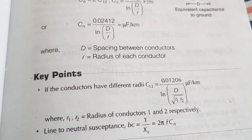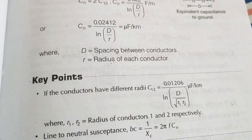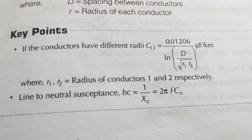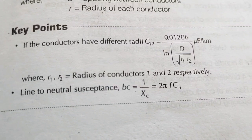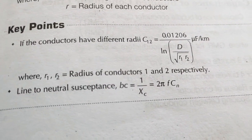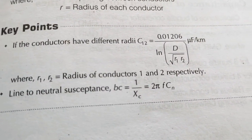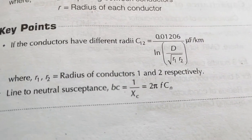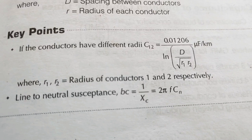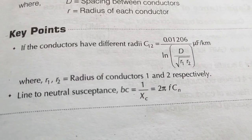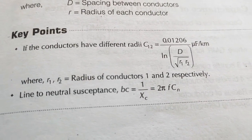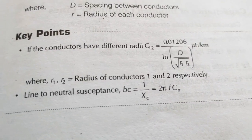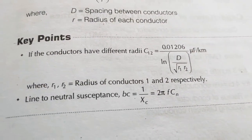Here D is the spacing between conductors and r is the radius of each conductor. If the conductors have different radii, C12 equals 0.01206 divided by ln(D / square root of r1·r2) microfarads per kilometer, where r1 and r2 are the radii of conductors 1 and 2 respectively. Line-to-neutral susceptance Bc equals 1/Xc, that is 2 pi f times Cn.